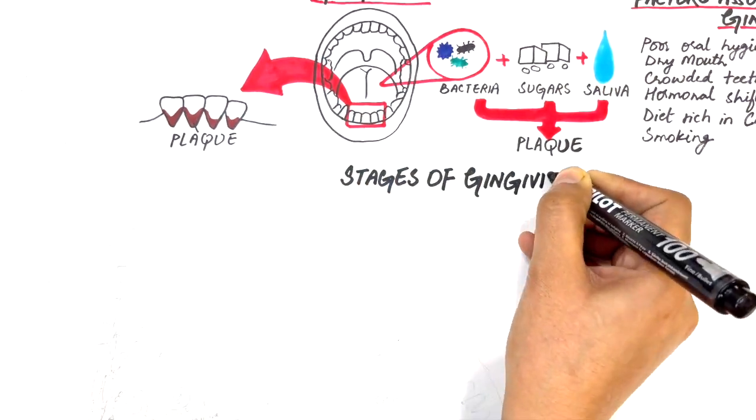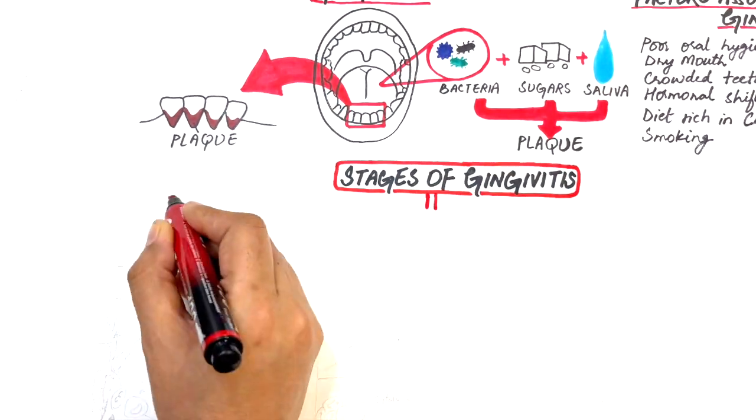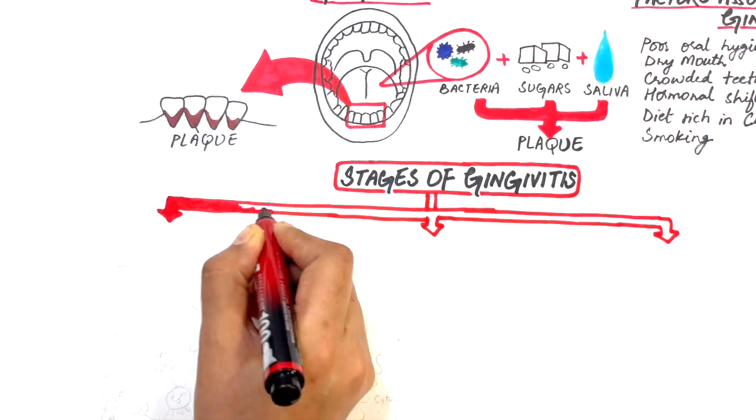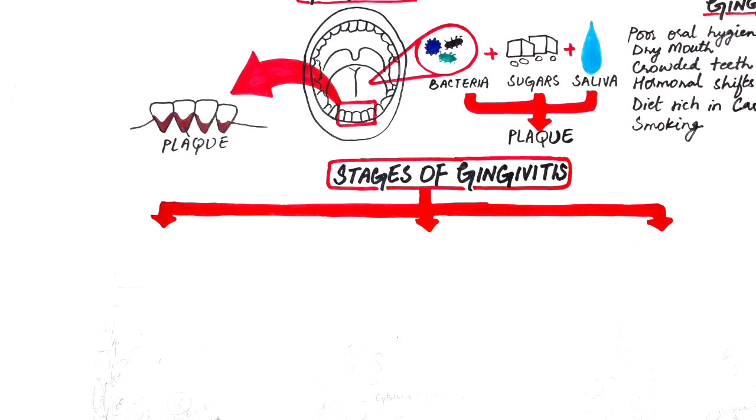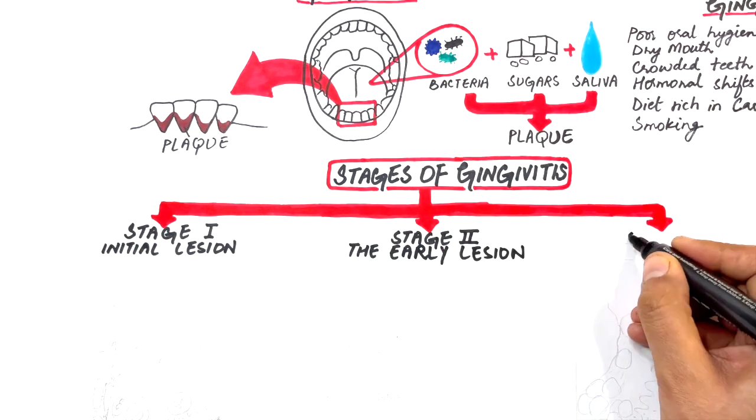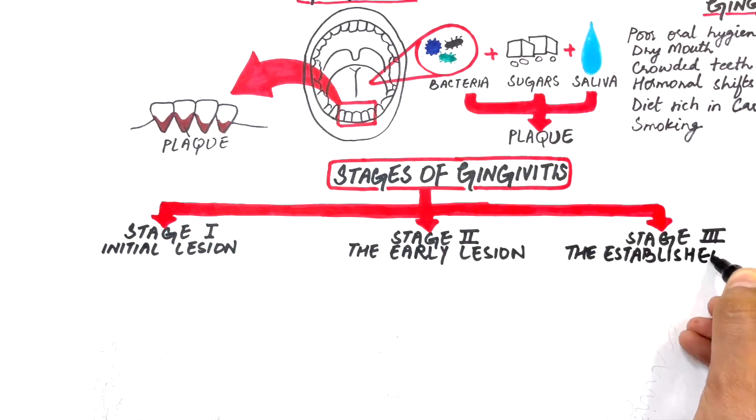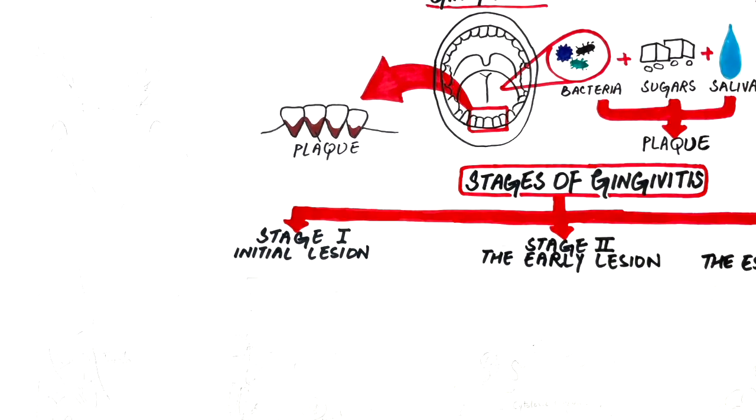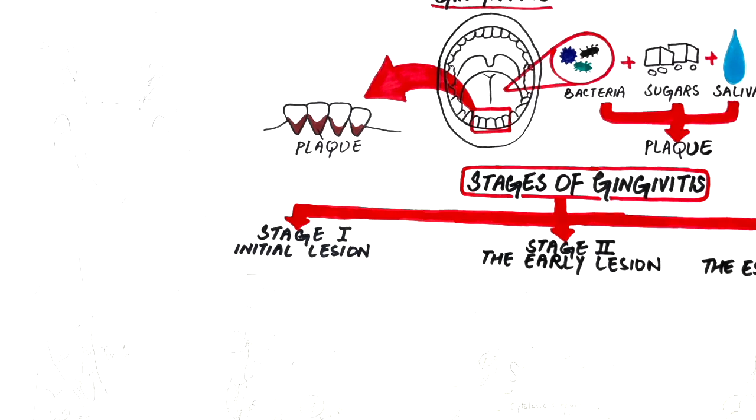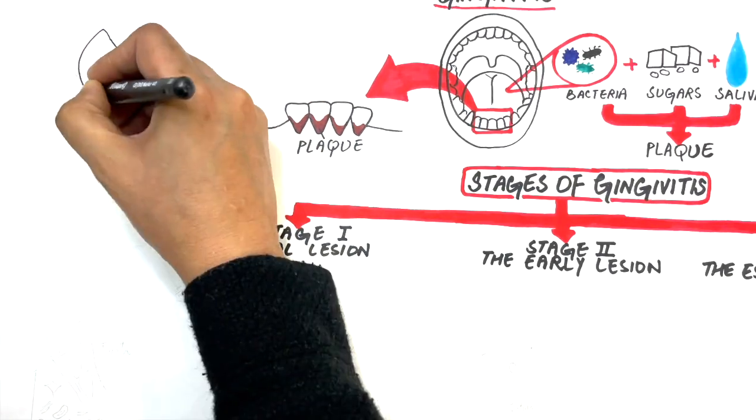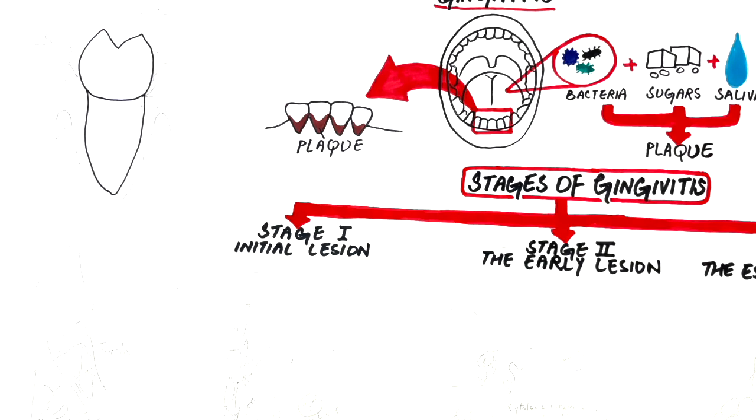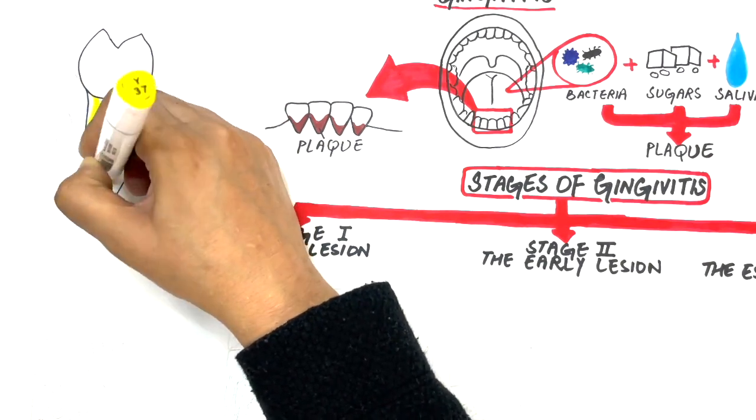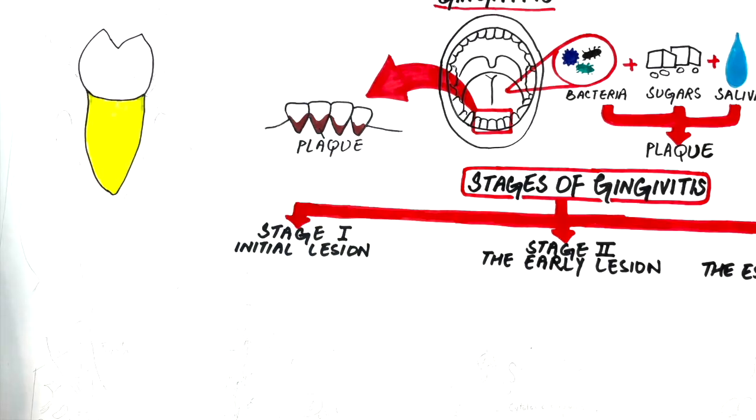The sequence of events involved in the development of gingivitis can occur in four different stages: stage one known as the initial stage, stage two known as the early lesion, stage three known as the established lesion, and stage four known as the advanced lesion. Before proceeding with these four stages of gingivitis, it's important to recap the histoanatomy of gingival epithelium so that we can have a great understanding of the disease process.